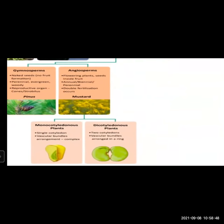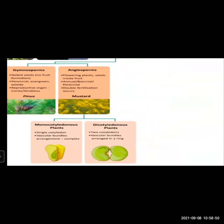Gymnosperm — the main features are: naked seeds are present, meaning no fruit formation. Such plants are perennial, evergreen, and woody plants. Their reproductive organ is cone (strobilus). Examples: Cycas, Picea, Pinus — also called Deodar. These are the characteristics of gymnosperm.